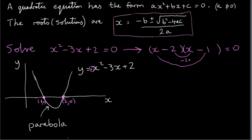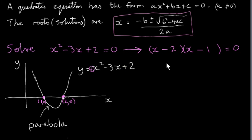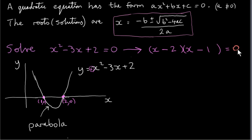That's a quick way to check that our factors are correct — we don't have to do the entire multiplication. x times x gives us x squared, minus 2 by minus 1 gives the plus 2 at the end, and the middle term is checked by the cross-multiplication. Now, if the product of two things is 0, that means either of them must be 0. The only way we can get 0 on the right-hand side is if either x minus 2 is 0 or x minus 1 is 0.